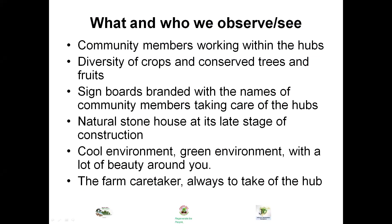Over the period we have worked with community members, we have seen several community members working within the hubs. The diversity of crops and conserved trees and fruits are coming up in unison. We have branded all the units, including community units — about eight units given to community members. We are also working on a natural stone house currently under construction. When you enter the system, you realize the very big difference from conventional monoculture: an instant change of temperature, a green environment with beautiful plants. Some of them I don't know because I just conserved them. We have a caretaker who makes sure everything is in order.